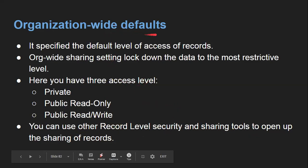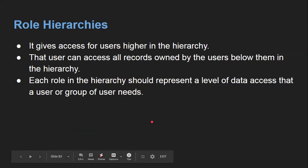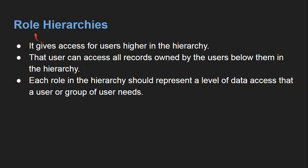For restriction you use organization-wide defaults, and for opening up sharing you use the other three things: role hierarchies, sharing rules, and manual sharing. Role hierarchies give access to users higher in the hierarchy. For example, if you are an employee with a manager, the manager is a higher user in the role hierarchy and can access all records owned by users below them. So records owned by you are automatically accessible by your manager because you are both in the same role hierarchy.